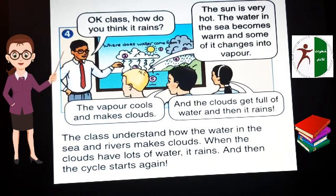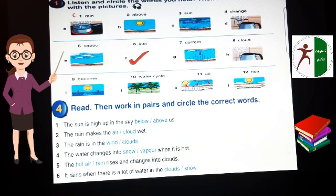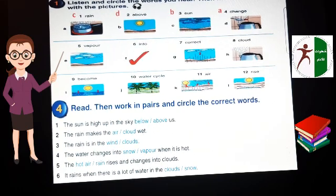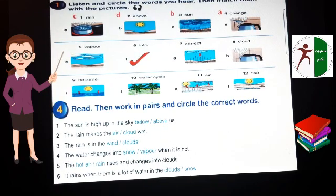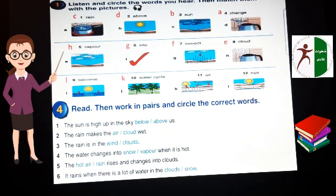Now let's move to the activities. The first one. Listen and circle the words you hear. Then match them with the pictures. بدنا نوصل الكلمات مع الصور. Number one, rain with picture C. Above with picture D. Sun with picture B. Change with picture A. The water changes to vapor when it's hot, when it boils. Number five, vapor with H. Into with G. Correct with F. Cloud with E. Become with L. Water cycle with K. Air with J. Rise with I.